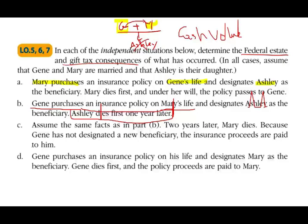Now let's change the scenario. Two years later, Mary dies. Because Jean had not designated a new beneficiary after Ashley's death, the insurance proceeds are paid to him. The proceeds will not be subject to transfer tax — neither Mary nor Ashley had any property interest in the policy. The policy is paid to Jean, and since life insurance proceeds are not taxable, there are really no tax consequences. Jean received the money.